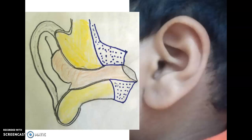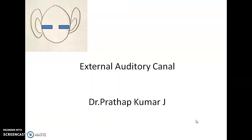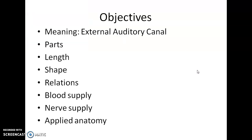Hi everyone, today's topic is the external auditory canal. It is a part of the external ear which includes the pinna or auricle — the outer part — and the inner tubular part is called the external auditory canal. The objectives of today's presentation cover parts, length, shape, relations, blood supply, nerve supply, and anatomy of the external auditory canal.